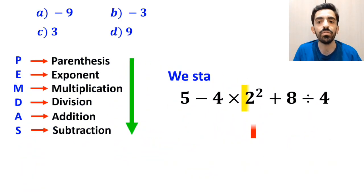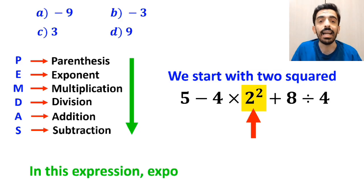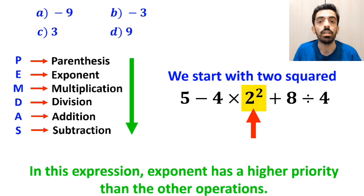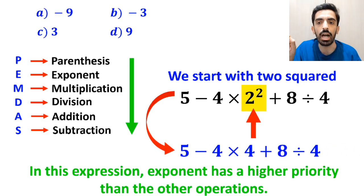Alright, first we start with 2 squared, because in this expression, exponent has a higher priority than the other operations. So, instead of the original expression, we can write 5 minus 4 times 4 plus 8 divided by 4.